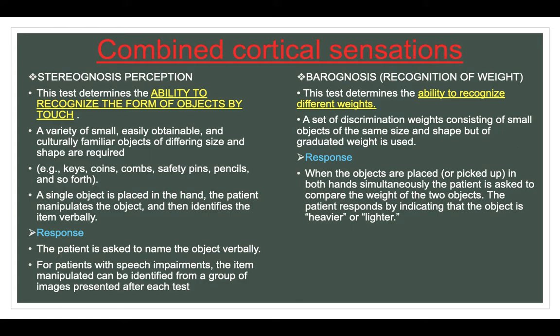Barognosis — recognition of weight: this test determines the ability to recognize different weights. A set of discrimination weights consisting of small objects of the same size and shape but of graduated weight is used. When the objects are placed or picked up in both hands simultaneously, the patient is asked to compare the weights of the two objects and indicates whether one is heavier or lighter.